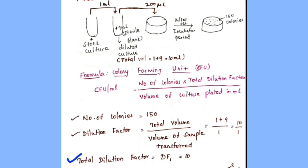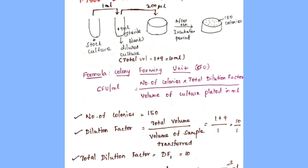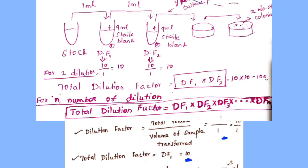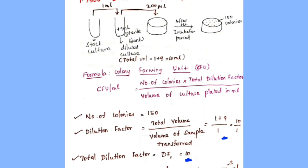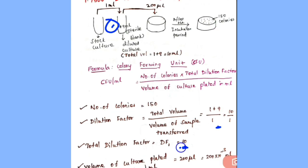Since only one dilution was made, the total dilution factor is the same as Df1, which equals 10. If a second dilution had been made, you would multiply Df1 by Df2 to get the total dilution factor. But here, total dilution factor equals 10.